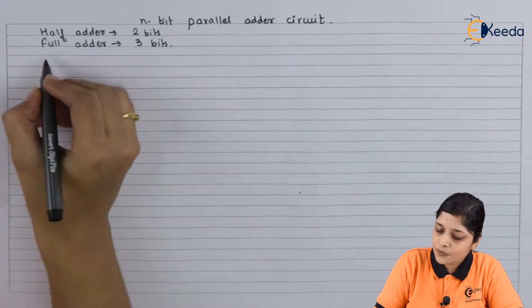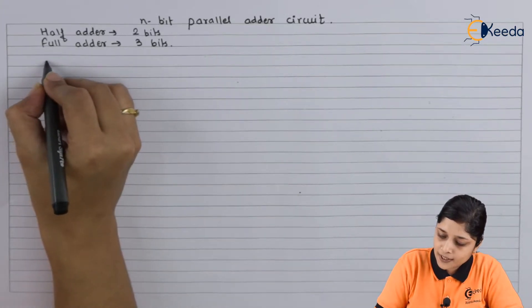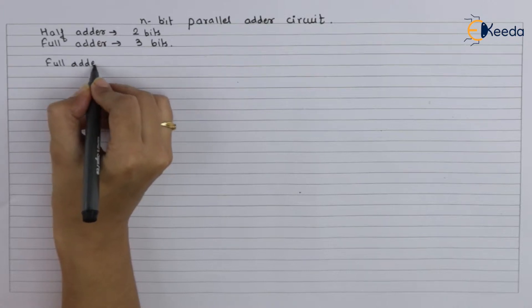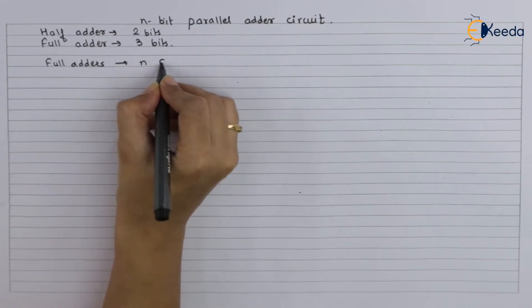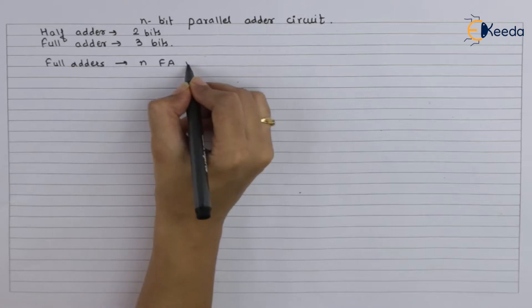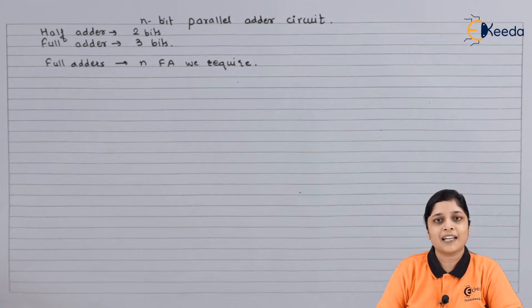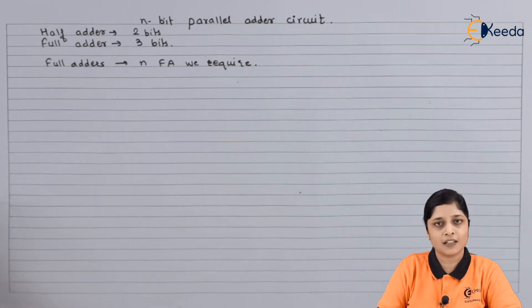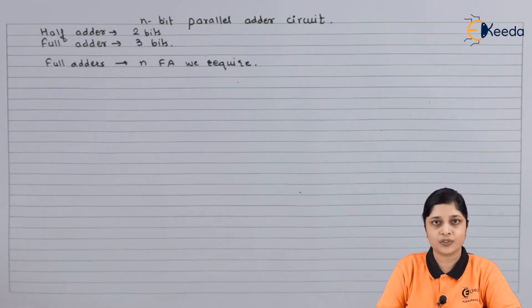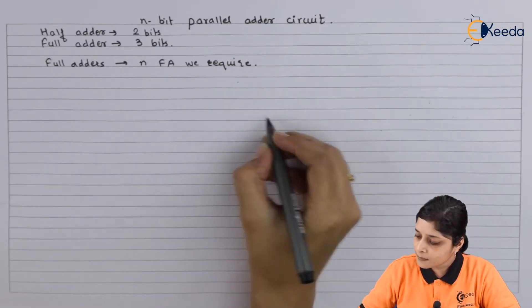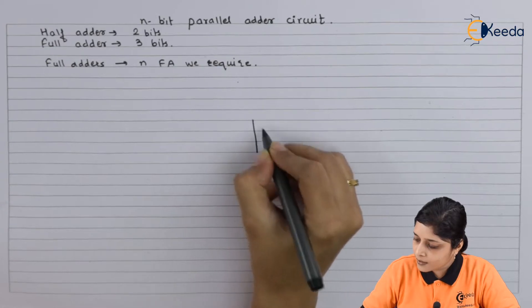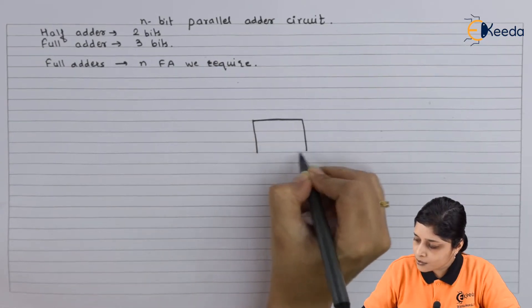We will draw here the full adders. N full adders we require because here more than three bit addition we have to perform. Generally we perform four bit addition, eight bit addition, 16 bit addition. According to the application you have to do the additions, so we will design the circuit. For that you require first full adder.